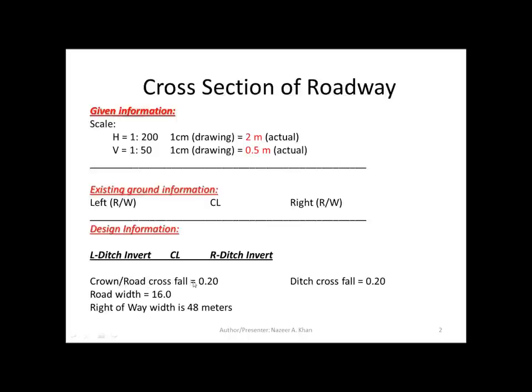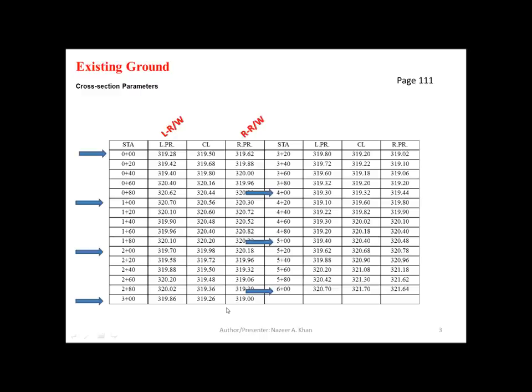The crown is the drop-off from centerline to the shoulder of the roadway. On each side of centerline you have a shoulder, and that drop-off is going to be 0.2 of a meter. The ditch cross-fall is also 0.2 of a meter, from the toe of the side slope to the ditch invert. The road width is 16 meters, so it'll be 8 meters on each side of centerline, and we have the right-of-way limit as 48 meters, so 24 meters on each side of centerline.